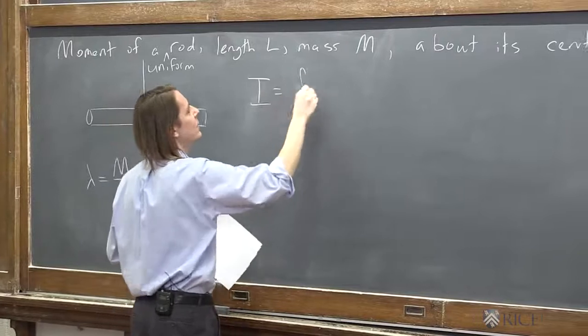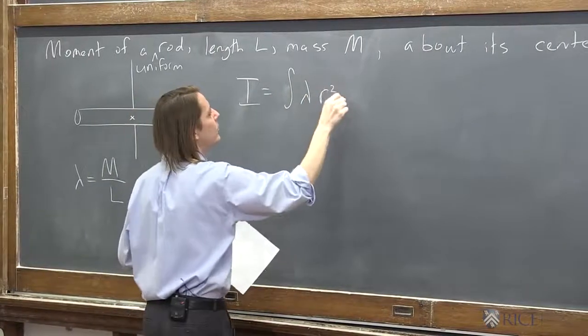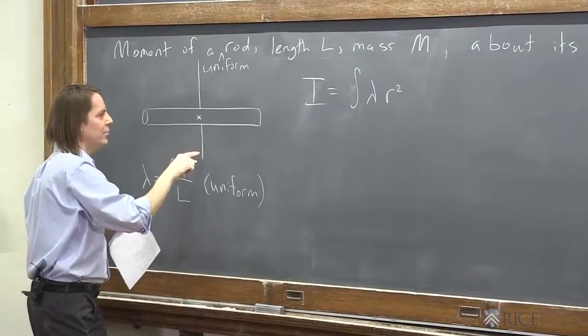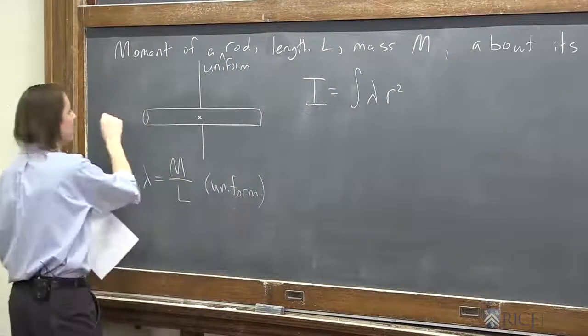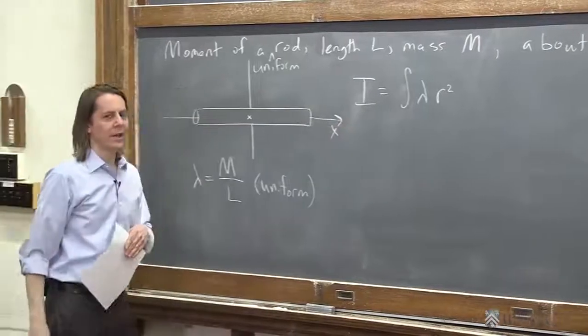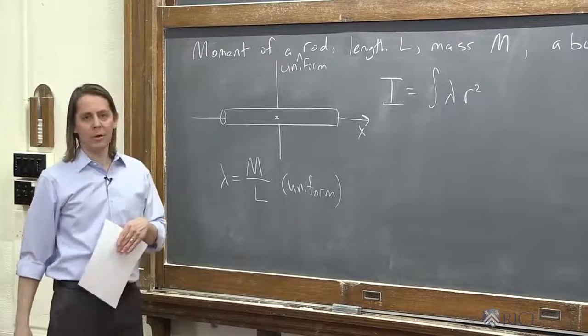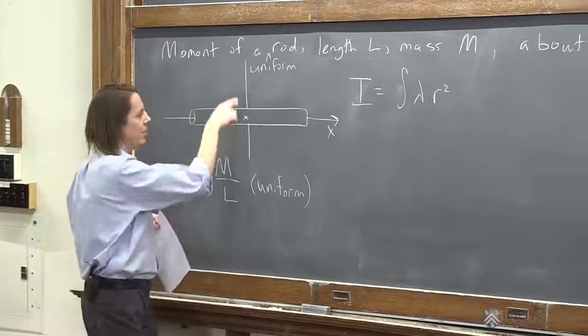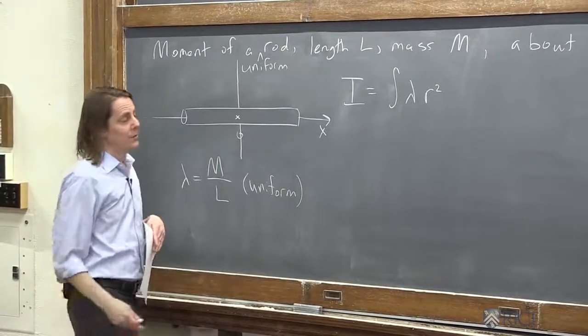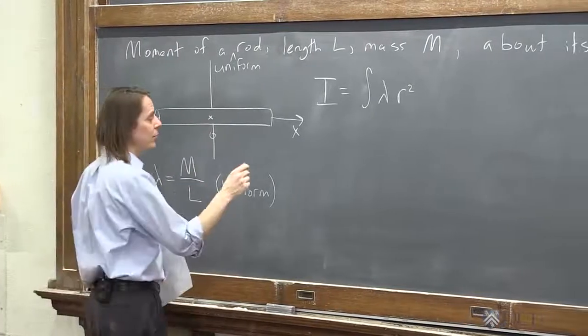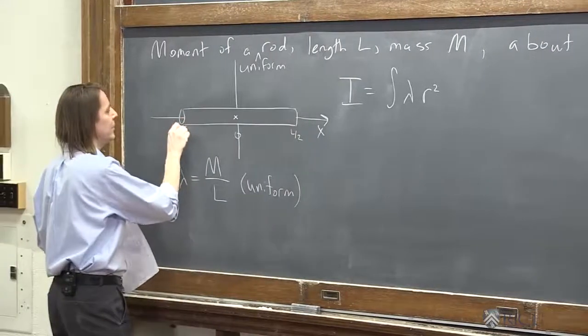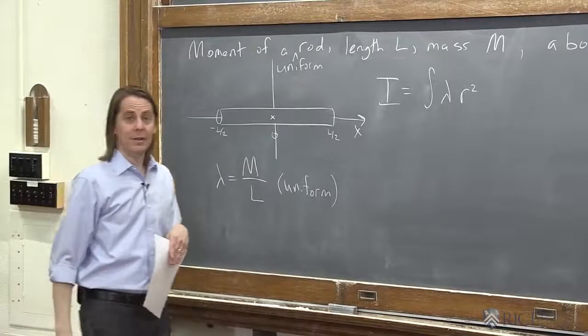We can say the moment is the integral of lambda r squared. And in this case, this is our axis, but we integrate along the geometry of the object, all right? So we're going to put an x-axis like this. Like that, yes. And if we have an axis like that, I would strongly recommend that you put the origin on the axis. So the origin of the x-axis is right in the middle of the rod, which means we're about to set up an integral. So you better realize this is at l over 2, and this is at minus l over 2. Yeah, we're probably going to need all that.